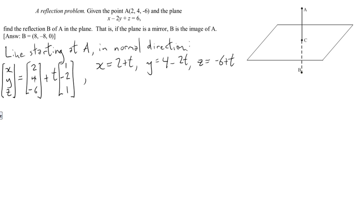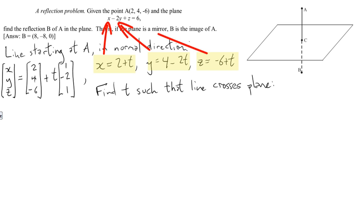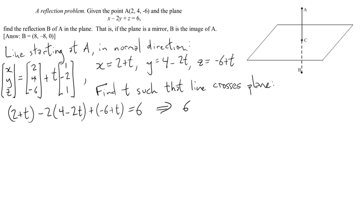Now, if you start at a point that's not on the plane and move in the normal direction to the plane, at some point that line is going to cross the plane. So we want to find the value of t such that the line crosses the plane. We'll do it by taking these equations for x, y, and z - 2 plus t, 4 minus 2t, minus 6 plus t - and plugging them into the equation of the plane, x minus 2y plus z equals 6, and solving for t. Here's what that looks like. Plug them in, simplify, rearrange, and you find t equals 3.